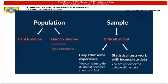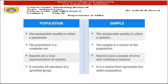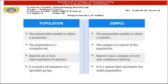The basic difference between population and sample: the measurable quality from a population is called a parameter, and the measurable quality chosen from a sample is called statistics. The population is a complete set; the sample is a subset of a population. Reports have a margin of error and a confidence level. Population contains all the members of a specified group, while a sample is a subset that represents the entire population. With this, I conclude the difference between population and sample. Thank you.